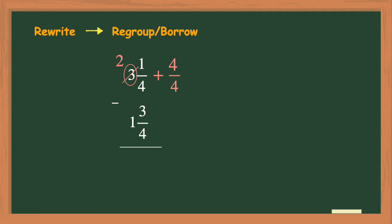Next I bring over the whole number of 2 and then I add the numerators of these two fractions to get 5 and keep the denominator of 4 the same to give me the equivalent fraction of 5 fourths. So my new mixed number after regrouping is 2 and 5 fourths. Then I bring over the mixed number of 1 and 3 fourths.